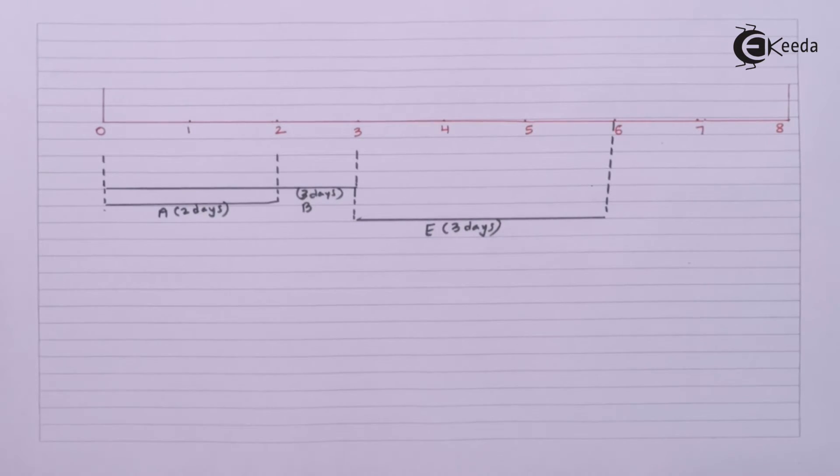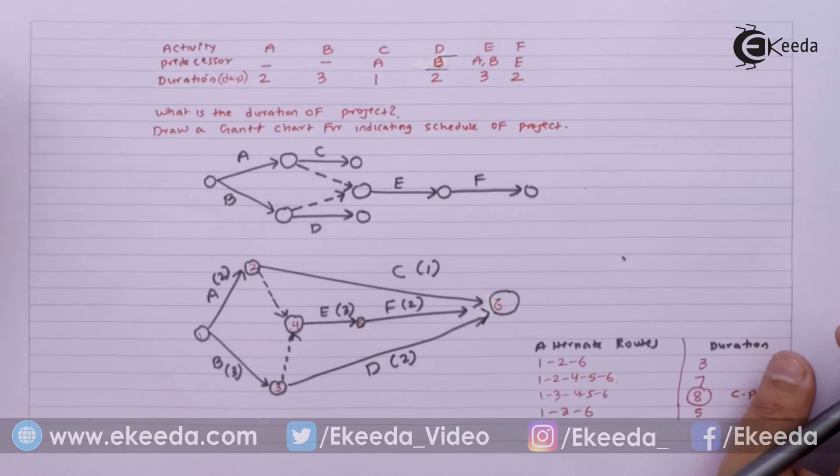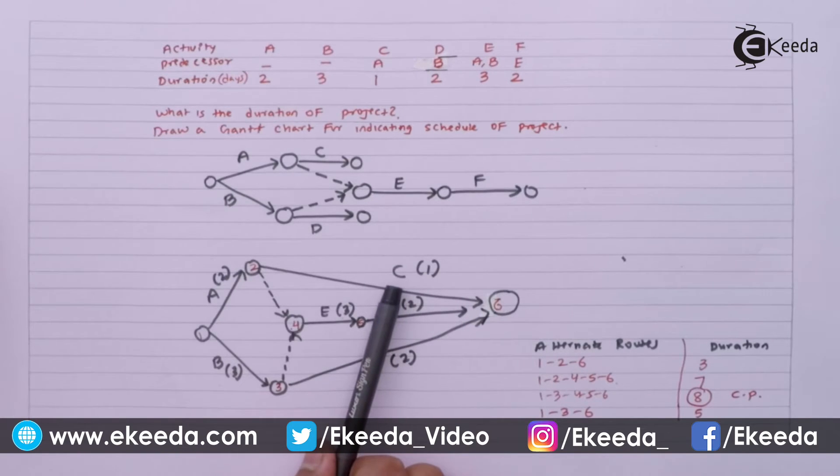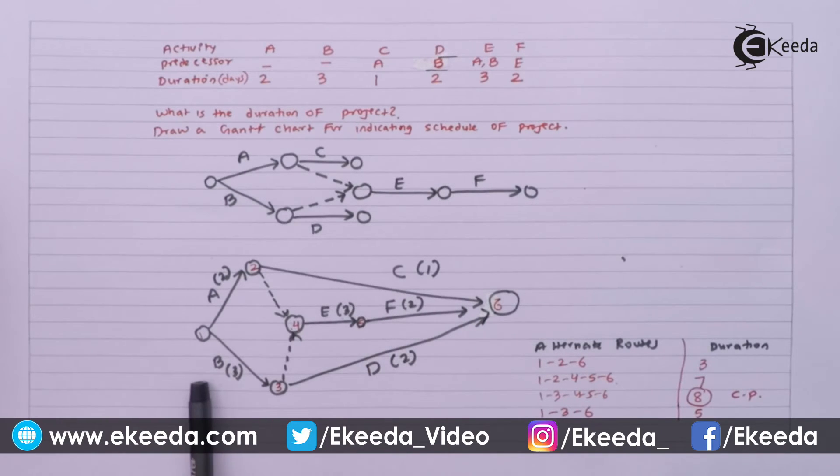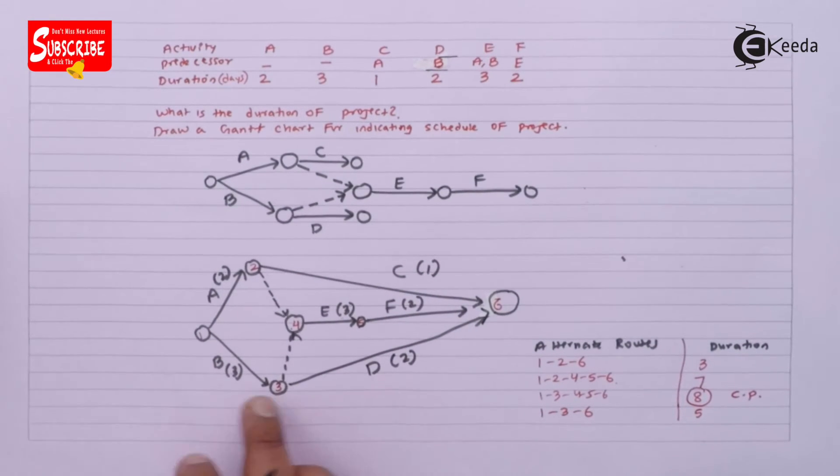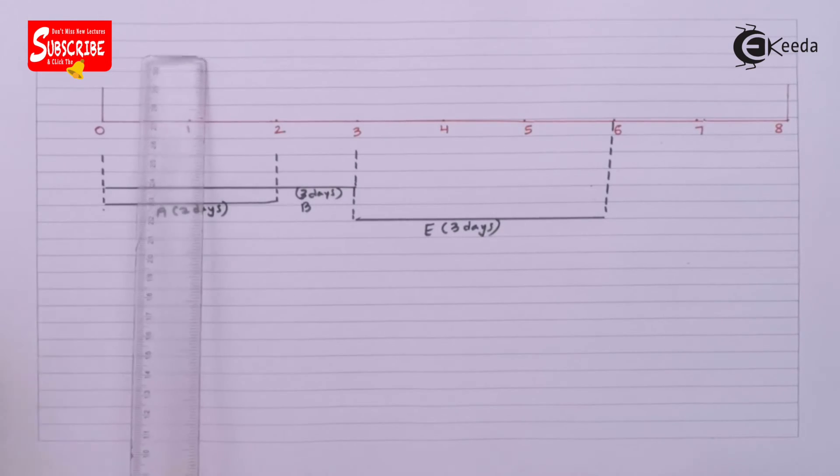In this project we have started on day one with A and B. A will be here for 2 days, B will be here for 3 days. Then A will be finished and we have started E for 3 days. If you look at the diagram again, after A I could have started with C for 1 day. After B I could have started with D for 2 days. So after A, C will be here for 1 day. After B, D will be here for 2 days.